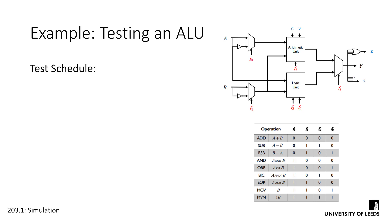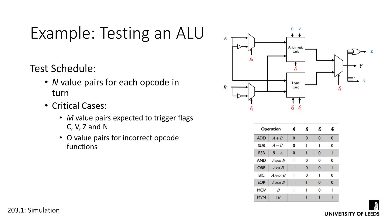From this, we can derive our test schedule. We want to test N value pairs for each opcode in turn to ensure the operation functions as desired. Our critical cases are M value pairs, which are expected to trigger flags C, V, Z and N. Finally, we'll need O value pairs for each incorrect opcode function. So how do we determine N, M and O — how many values should we be testing?